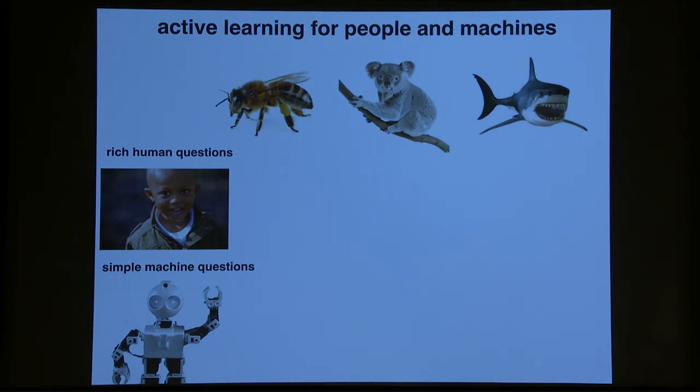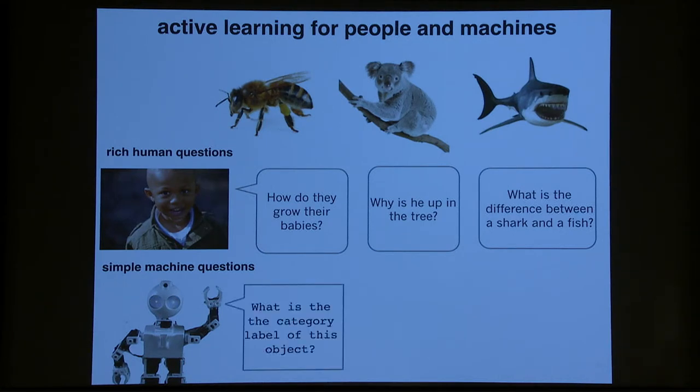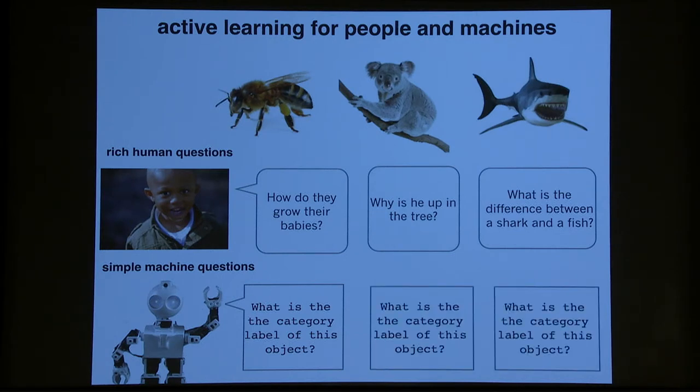So these are the real types of questions that children ask in scenarios like this. Like how do they grow their babies? Or to the koala, why is he up in a tree? Or what's the difference between a shark and a fish? Interesting rich creative questions that tap into the causal structure of how things work in the world. But if you ask an active learning algorithm that's trying to learn about animals and classify images to ask questions, really the only question it ever asks is, what is the category label of this object? What is the category label of this object? And I'm simplifying a little bit. Of course, there's chatbots and dialogue systems that could ask more interesting questions than this, although often they're pre-programmed. But it's fair to say that there's no algorithm that comes anywhere close to the richness and the complexity of the human ability to ask questions while learning.